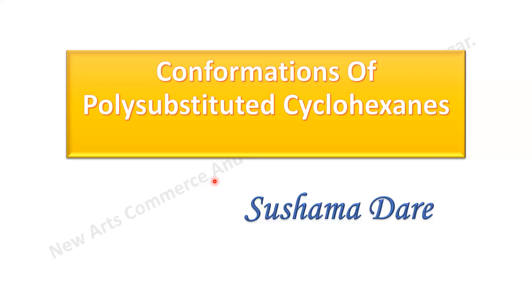The next topic was the disubstituted cyclohexane ring — that is 1,2-dimethylcyclohexane, 1,3-dimethylcyclohexane, and 1,4-dimethylcyclohexane — and the geometry of these conformers, that is the cis conformer or trans conformer. These things we already discussed last year.